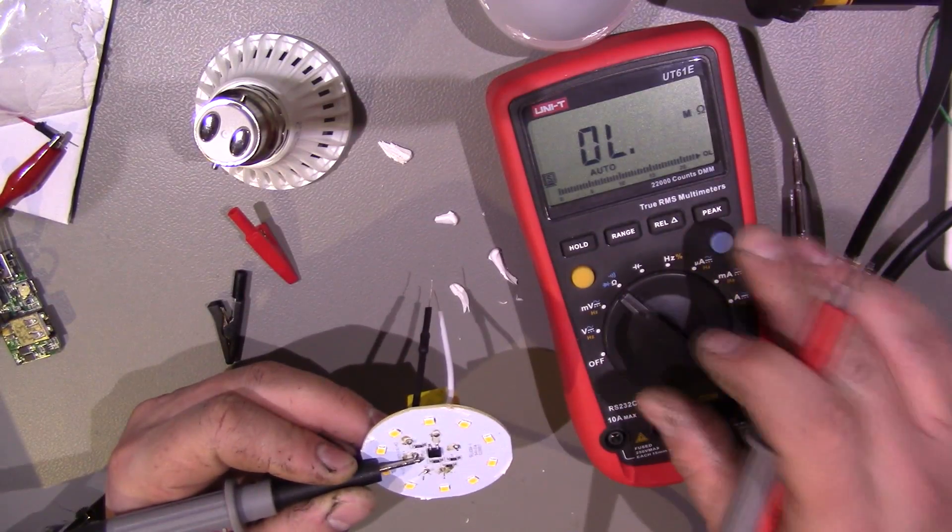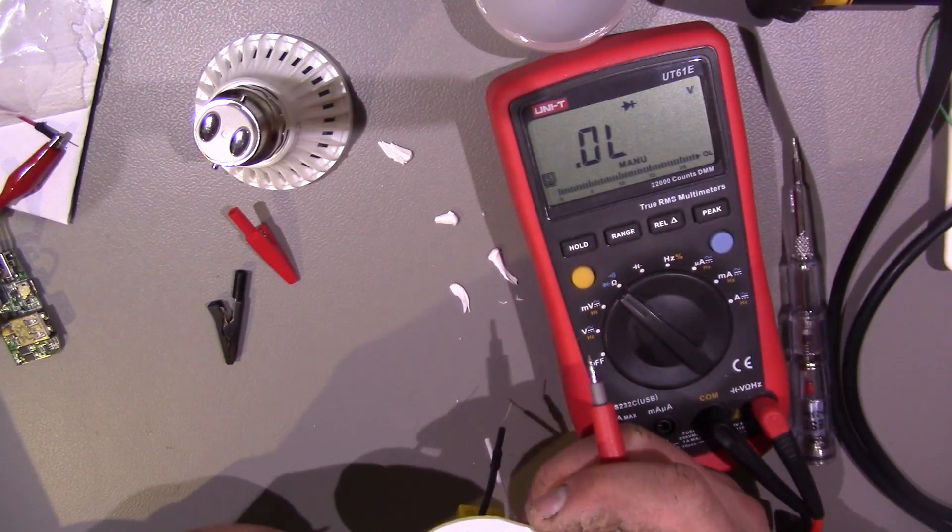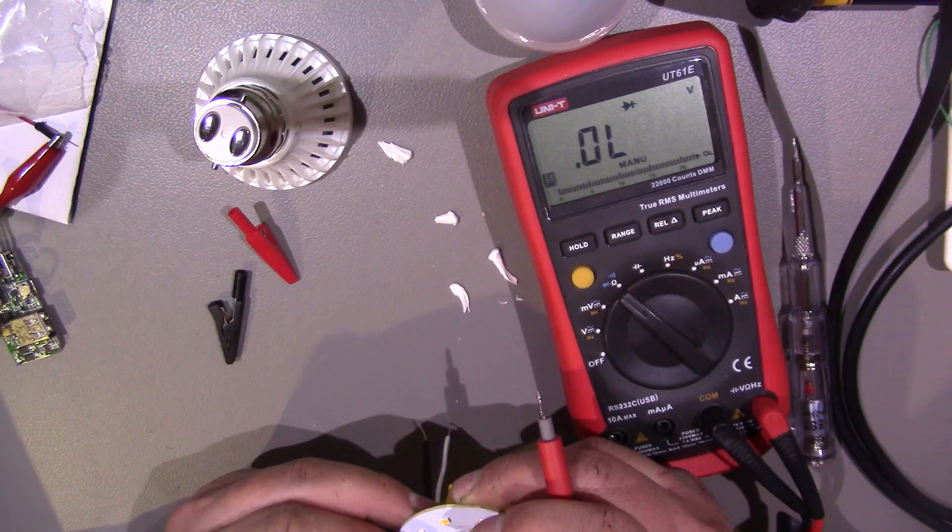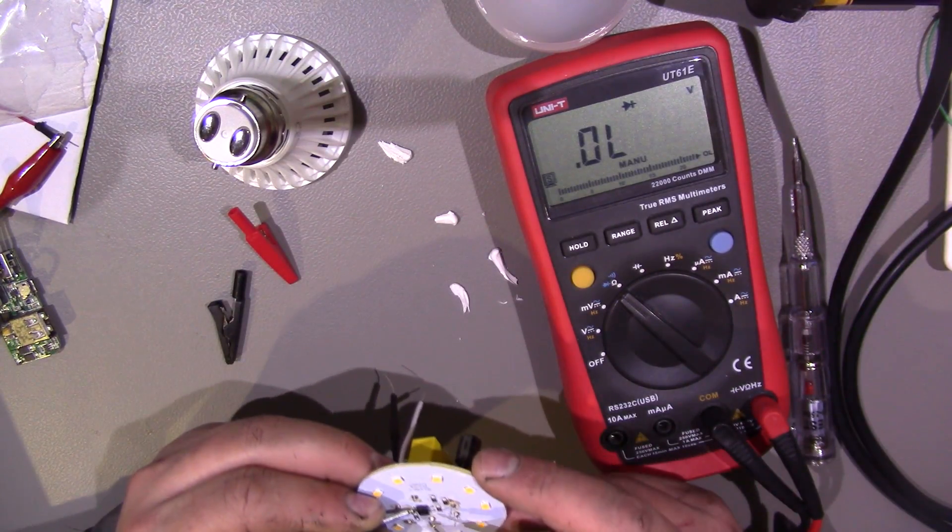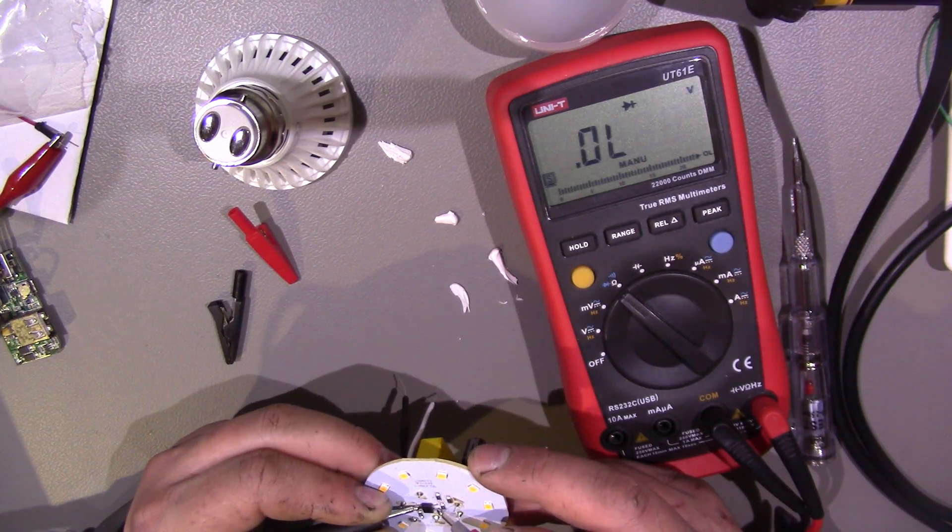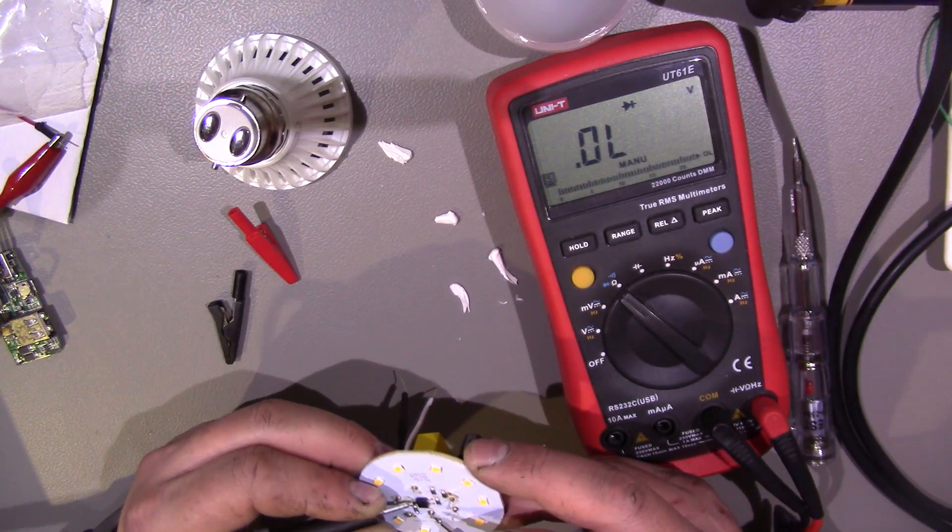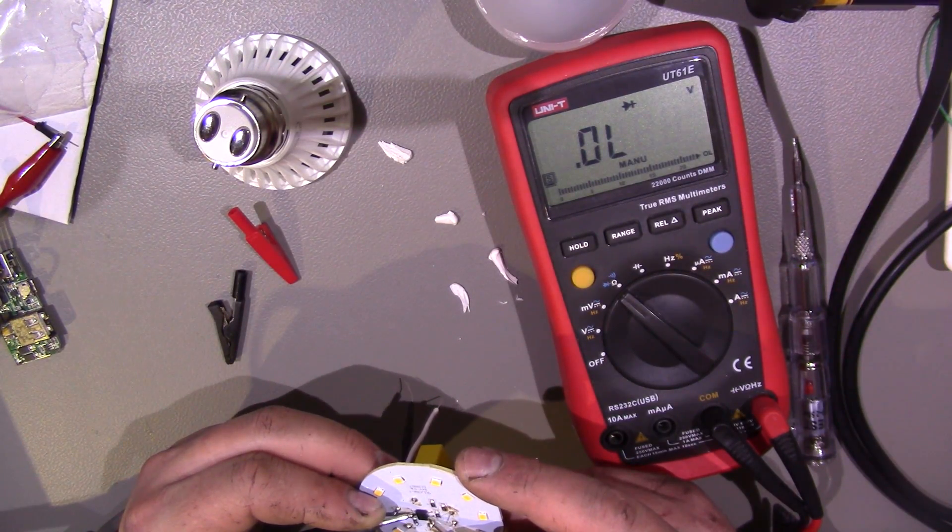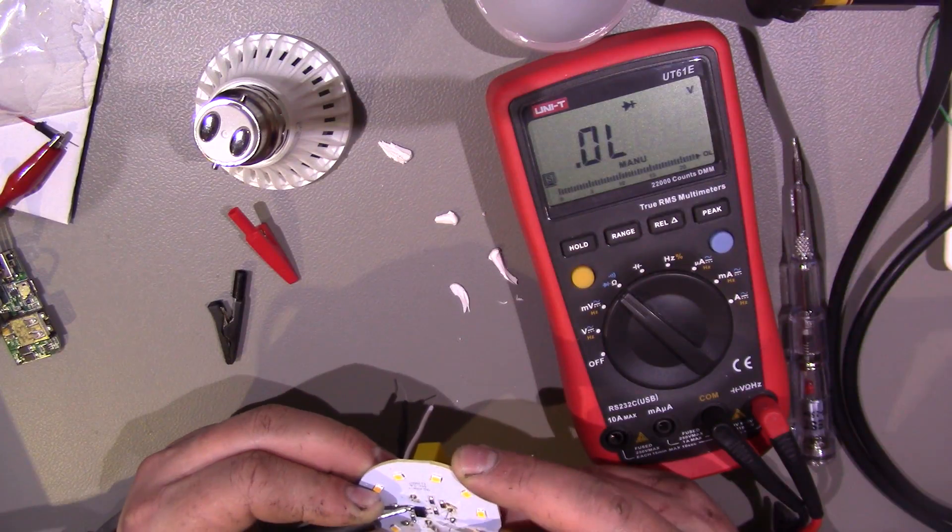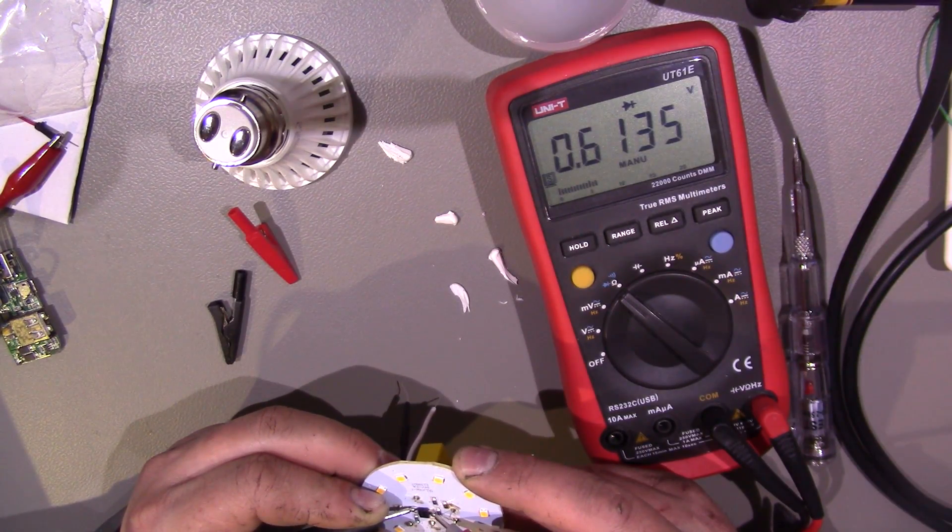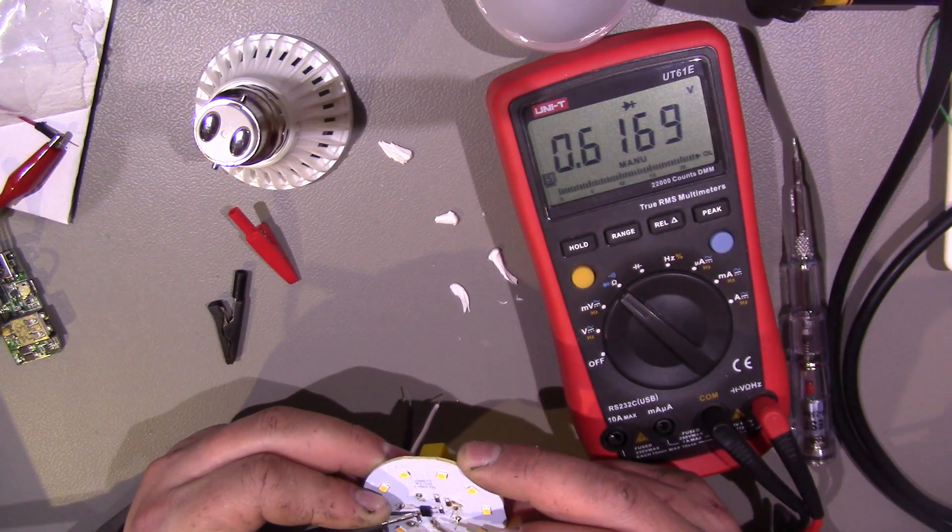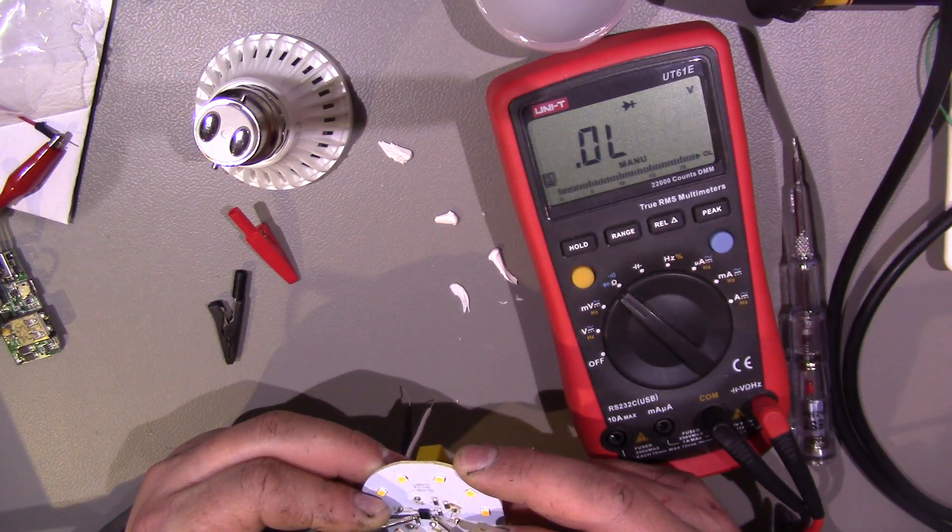Let's see if we can test the bridge rectifier. Alright, let's have a look. Okay, 0.6V diode drop across there. Try that side. Nothing there. So we've got definitely 0.6V diode drop there. 0.6V there. Nothing on that pin at all.